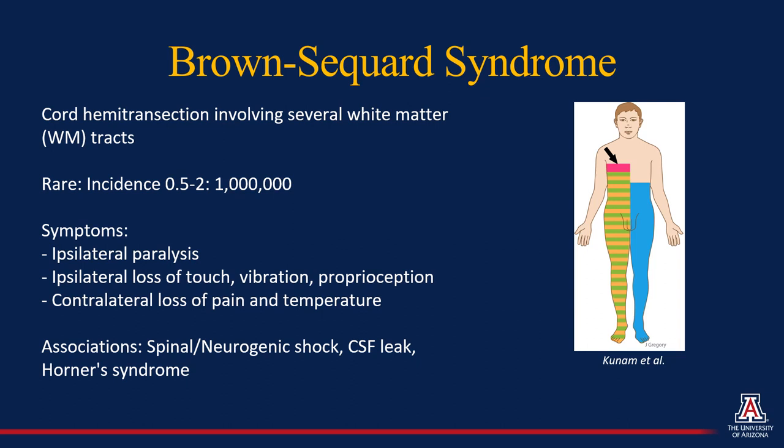Brown-Séquard Syndrome represents a cord hemitransection, which involves several white matter tracts. This is a rare type of cord injury with some incidences reported between one-half to two cases per one million people a year. There is a specific constellation of clinical symptoms which include ipsilateral paralysis, ipsilateral loss of touch, vibration, proprioception, as well as a contralateral loss of pain and temperature sensation.